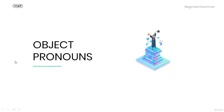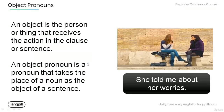Hello, welcome to this tutorial. Today we are going to talk about object pronouns. Let's get started. An object is the person or thing that receives the action in the clause or sentence.